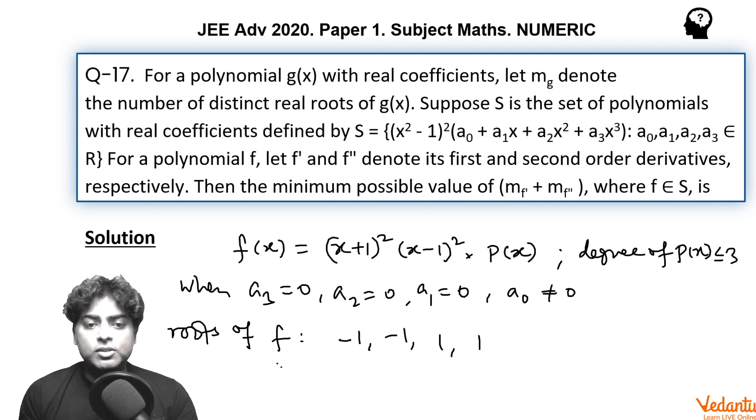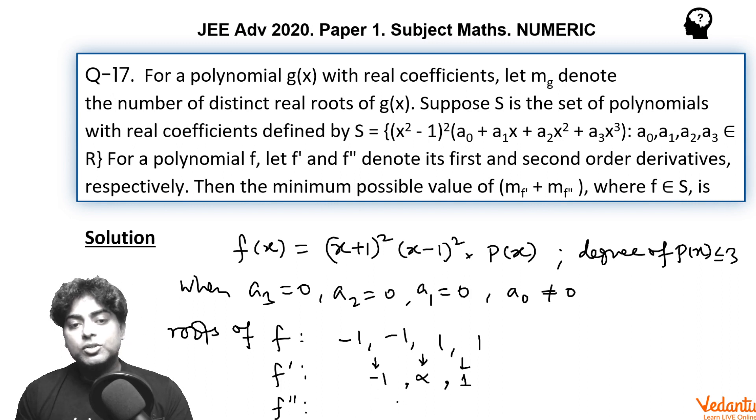According to Rolle's theorem, f' will have at least one root between minus 1 and 1, that is actually minus 1 only. As minus 1 is a repeated root of f, minus 1 will also be a root of f'. Between minus 1 and 1, there will be some root alpha. Between 1 and 1, again 1 is a root for f'. Then for f'', minimum number of roots will be beta₁ and beta₂.